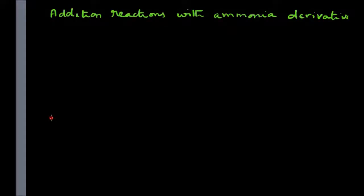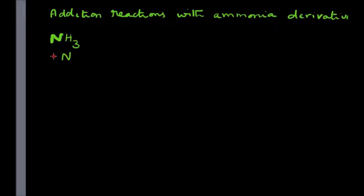We will take up the nucleophilic addition reactions of ammonia derivatives. Ammonia derivatives are obtained by replacing one of the hydrogens of ammonia by certain groups. For example, when you replace one hydrogen of ammonia by an alkyl group, what you get is NH2R, which is a primary amine.